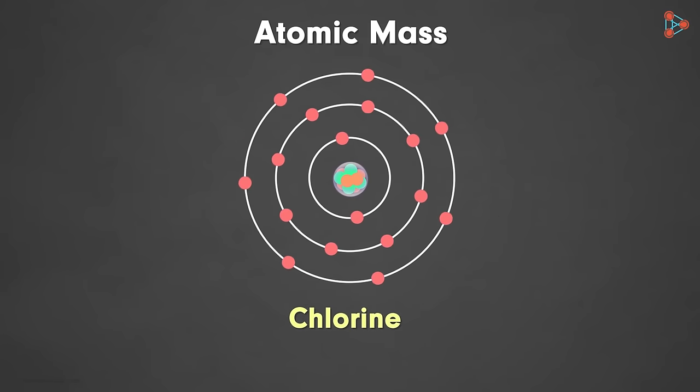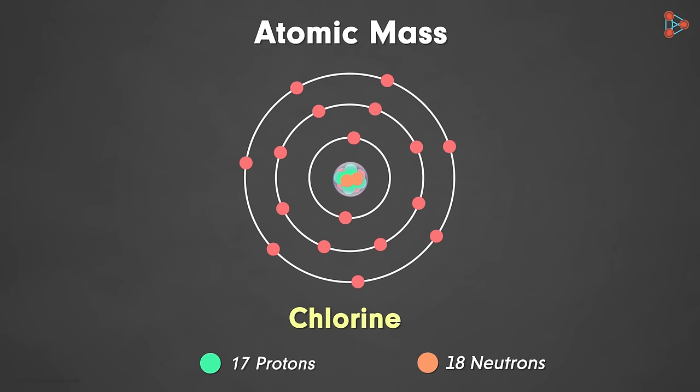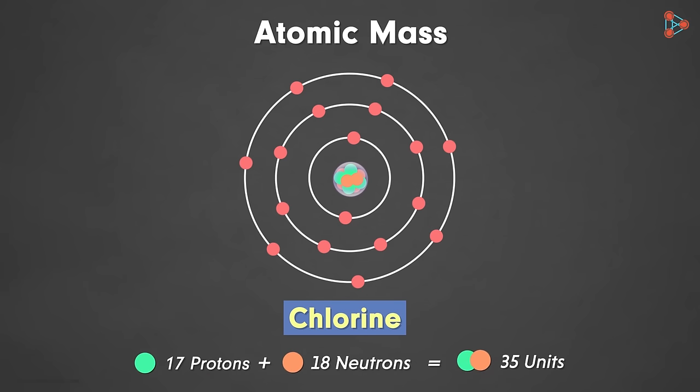Now let's take another random example of chlorine. A chlorine atom has 17 protons and 18 neutrons. That means the atomic mass of chlorine will be 35 units, right? Absolutely! But wait a second!